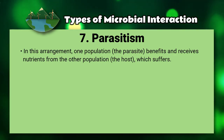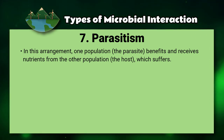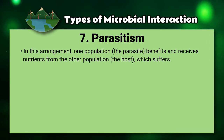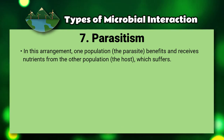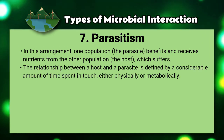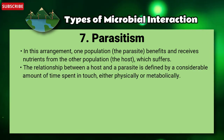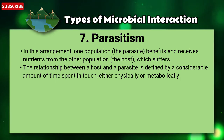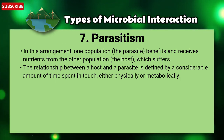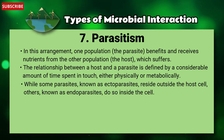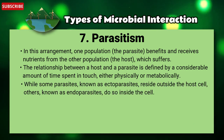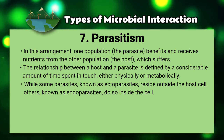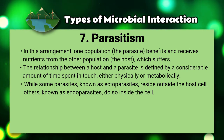Number seven: parasitism. In this arrangement, one population (the parasite) benefits and receives nutrients from the other population (the host), which suffers. The relationship between a host and a parasite is defined by a considerable amount of time spent in contact, either physically or metabolically. Some parasites known as ectoparasites reside outside the host cell, while others known as endoparasites do so inside the cell.